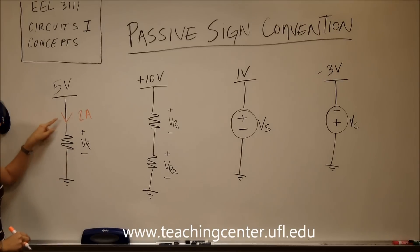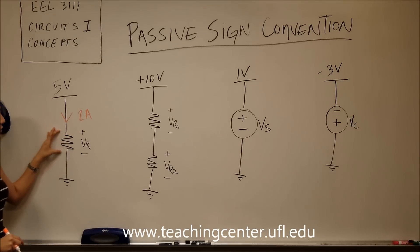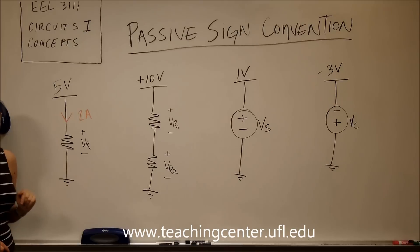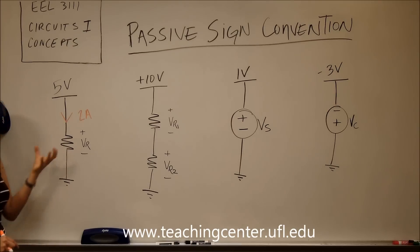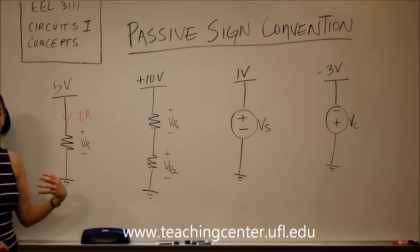Here we see that the current is pointing towards the positive pole of the resistor and it's obeying passive sign convention. That means this resistor is absorbing the power in the circuit.